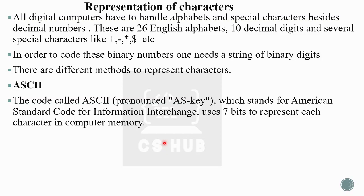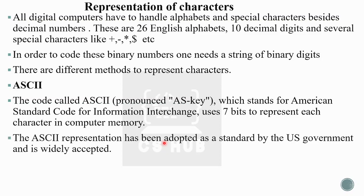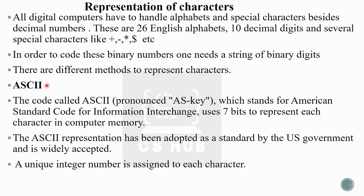When we press a key — for example, the English alphabet 'A' — it is stored as its corresponding seven-bit binary number in computer memory. Every character is stored in seven-bit binary form. ASCII has been adopted as a standard by the U.S. government and is widely accepted. It is the most commonly used method for character representation, and a unique integer number is assigned to each character.